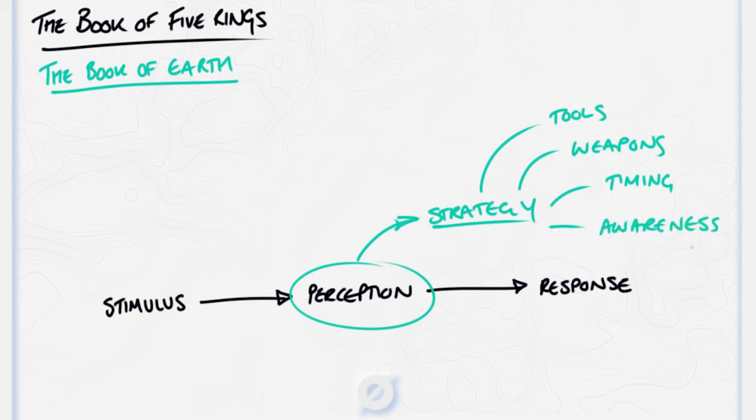In the Book of Earth, Musashi also places importance on timing, writing, Timing is important in dancing and pipe or string music, for they are in rhythm only if timing is good. Timing and rhythm are also involved in military arts, shooting bows and guns and riding horses. In all skills and abilities there is timing. There is timing in the whole life of the warrior, in his thriving and declining, in his harmony and discord. Similarly, there is timing in the way of the merchant, in the rise and fall of capital. All things entail rising and falling timing. You must be able to discern this.